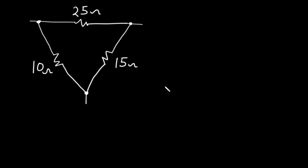This is a delta connection because the three resistors are connected end to end. Whenever you come across three resistors connected end to end, you have a delta network. Before we do the conversion, we are going to draw the star network inside the delta network.